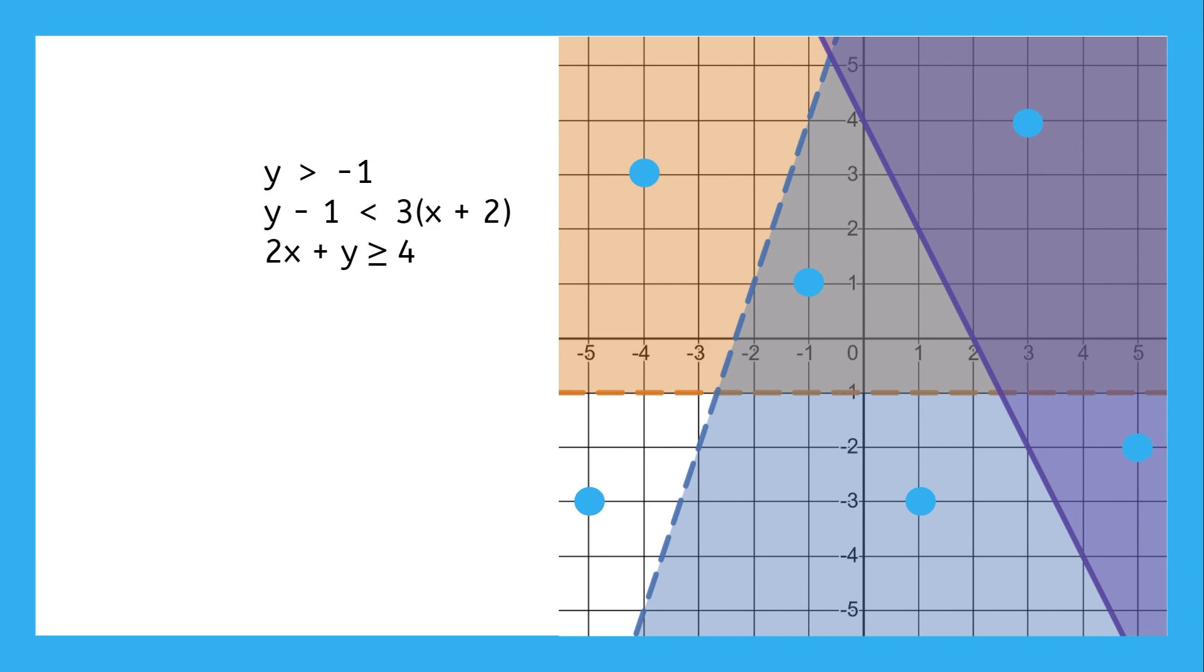We can automatically rule out (-5, -3) because that's not in any of the areas. It's pretty obvious that (-4, 3) doesn't work either because it's only in the orange area, not blue or purple.